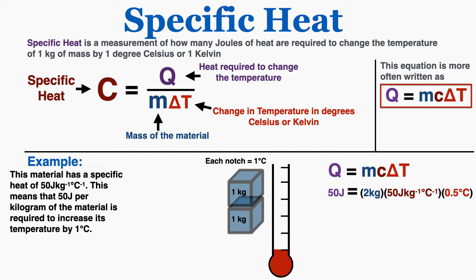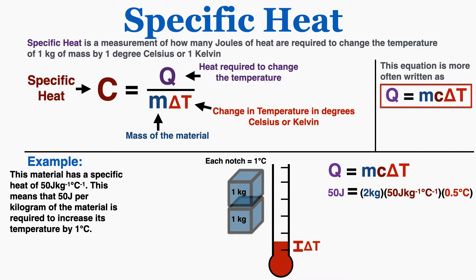Now let's say we have 2 kilograms of this material. The specific heat says that 50 joules are required to change the temperature of 1 kilogram by 1 degree, so now we're trying to change twice that mass. If 50 joules is enough to change 1 kilogram by 1 degree, it's only going to be enough to change 2 kilograms by half a degree. The energy is evenly distributed, so each individual kilogram only gets 25 joules — enough to change the temperature by only half a degree.